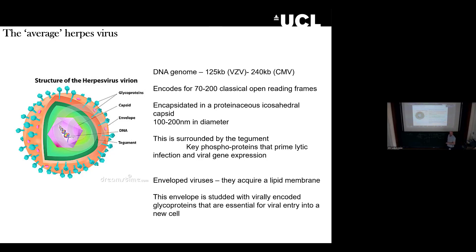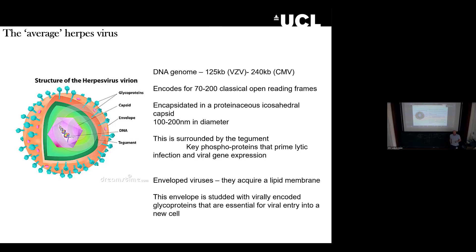What does the average herpes virus look like? First, they are large. They are double-stranded DNA genomes, anywhere between 125 kb — which is the VZV genome, the smallest herpes virus — up to 240 kb, which is cytomegalovirus. That's a lot of coding capacity. If we think about HIV, which is around 8 to 9 kb, hepatitis C is also an 8 to 9 kb genome. These are large viruses genetically, and that means they have fantastic coding potential.